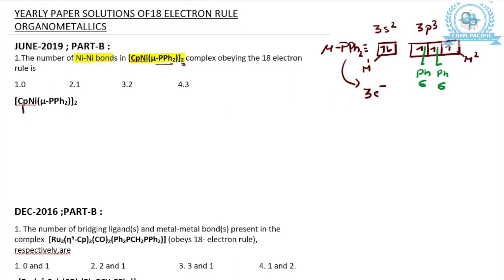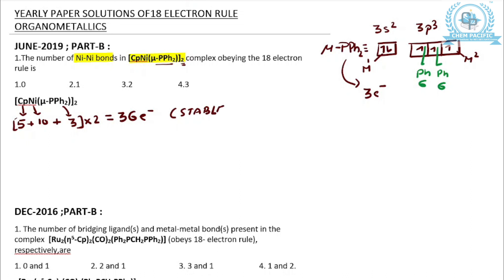You are having CP in the η5 mode, so this is a 5-electron donor. The valence electrons of nickel is 10, and we have just calculated this μ-PPh₂ to be a 3-electron donor. So the total electron count is 36. Since it consists of 2 metals, if the total electron count is 36, then this will become stable, and there is no formation of a metal-metal bond.